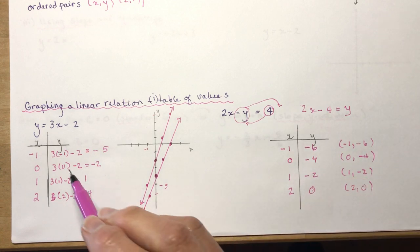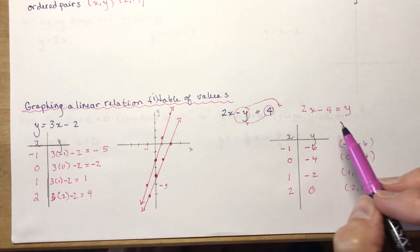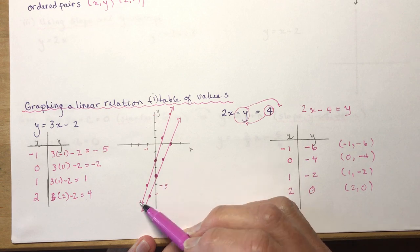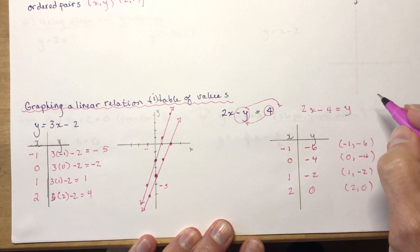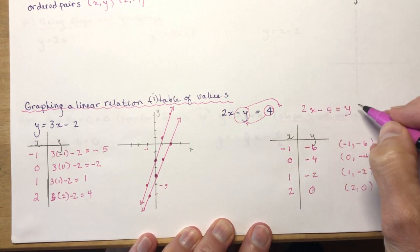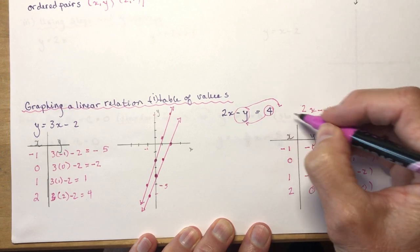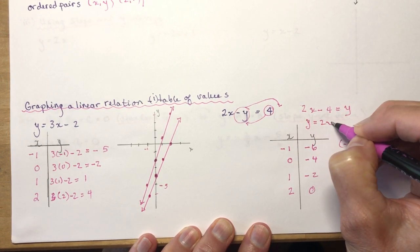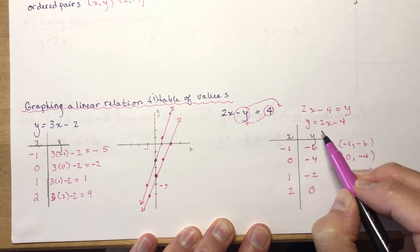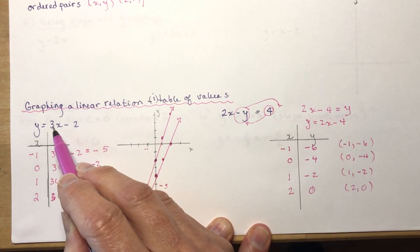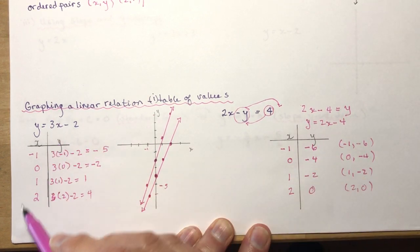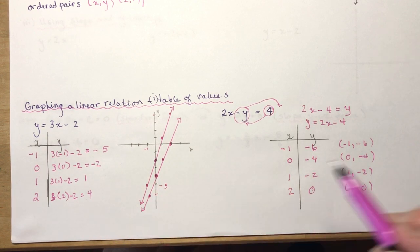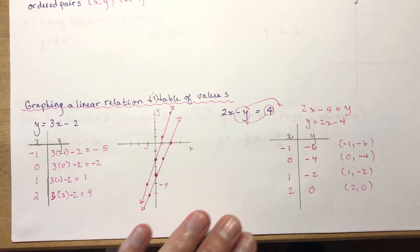Now you might say, would these lines intersect? They will intersect somewhere. They're not parallel because if I rearrange the equation and put y to the other side — in y equals mx plus b format — you can see they have different slopes. If the slopes are different, they will intersect, probably somewhere down here off the page.